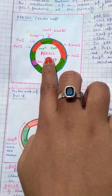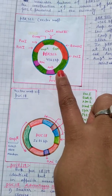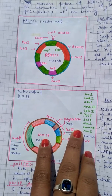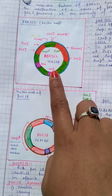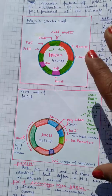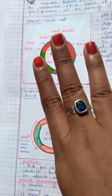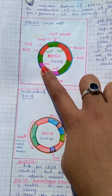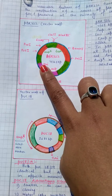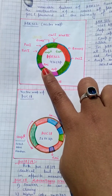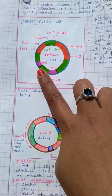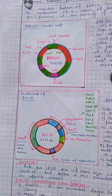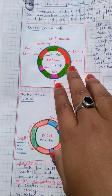pBR322 is a very old vector. pUC18 is a derived form of pBR322, and it is shorter in its DNA sequence than pBR322. In this diagram you can see there are three most important things for a vector. The first important feature is that the vector should have an ORI site — ORI means origin of replication — so this site should be present in a vector to make it a functional vector.